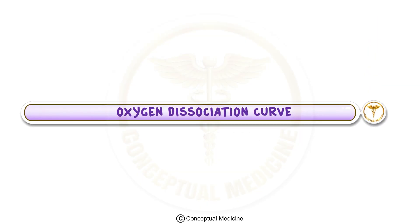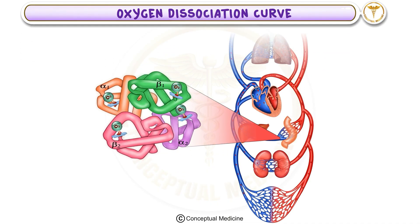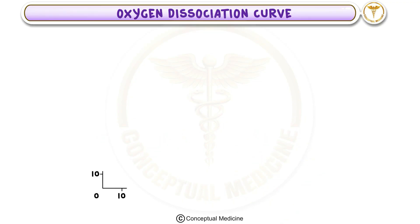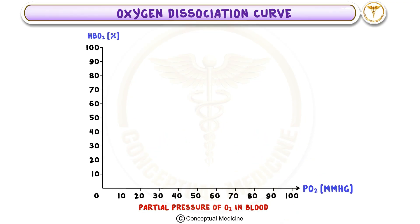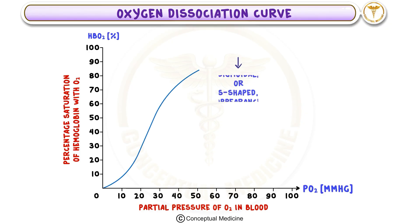In this lesson we'll be discussing the oxygen-hemoglobin dissociation curve, an essential concept for understanding how oxygen is transported in the blood and delivered to tissues. This curve illustrates the relationship between the partial pressure of oxygen in the blood and the percentage saturation of hemoglobin with oxygen, which we call HbO2.